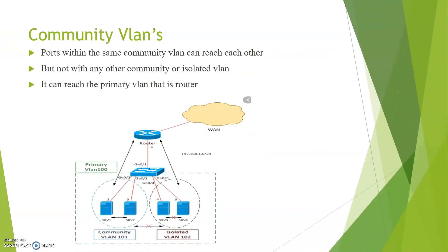What is a community VLAN? As per the architecture, VLAN 101 is a community VLAN. Ports associated with the community VLAN can communicate with each other, but cannot communicate with any other secondary or isolated VLAN. However, the community VLAN can reach the router, and the traffic from the community VLAN to the router is unidirectional.